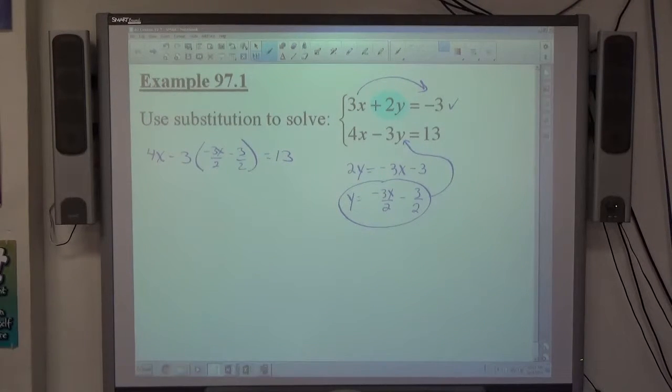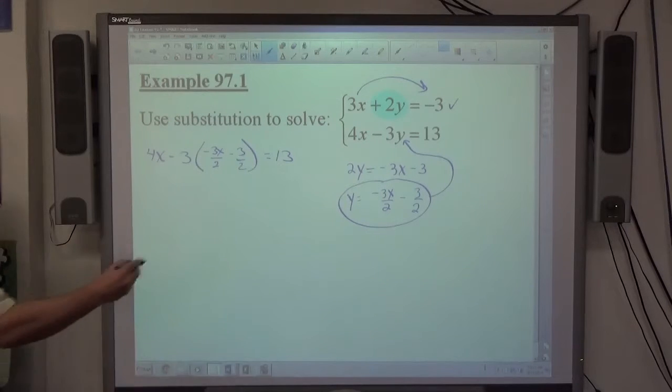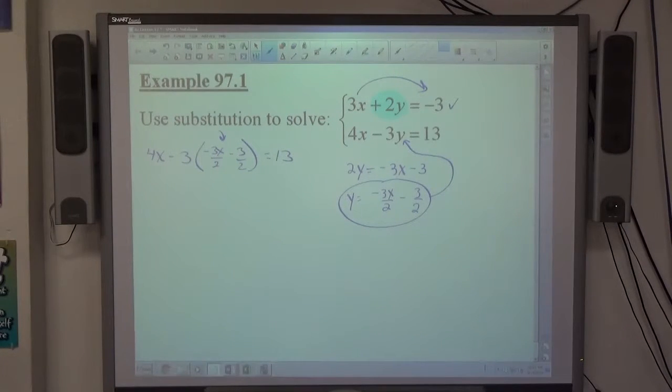So the bottom equation is 4x minus 3y equals 13, but y got replaced with y's equivalent value, negative 3x over 2 minus 3 halves. That's the substitution step.